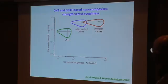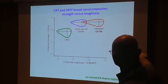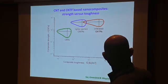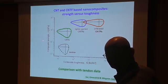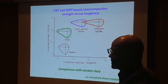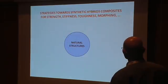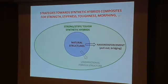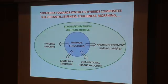Looking at where we stand: plotting composite strength versus composite stiffness, tendon is here, and we have performed comparably well. Our overall approach is to start with observation of natural structures, then go to synthetic hybrids through nano-reinforcement, interfacial fiber structure, multi-layer structure, and similar principles.